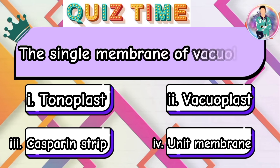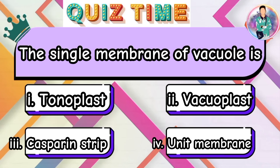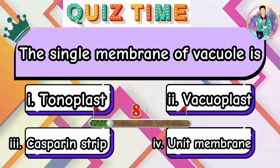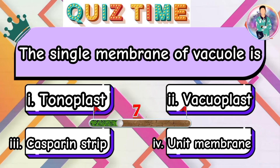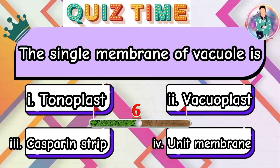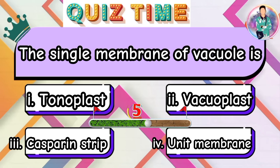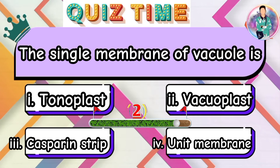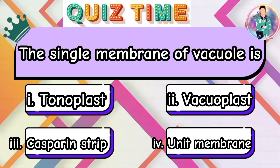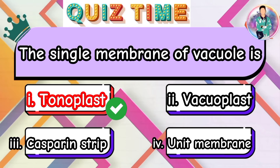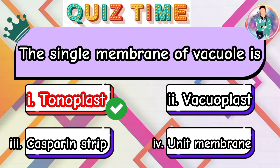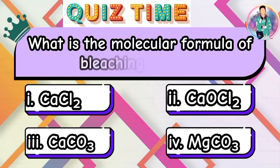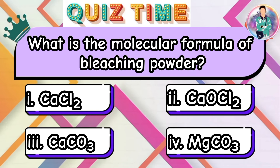The single membrane of vacuole is? What is the molecular formula of bleaching powder?